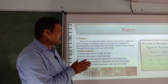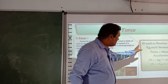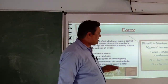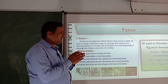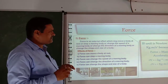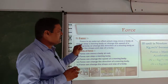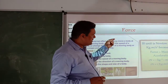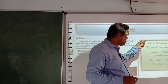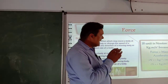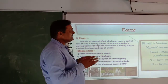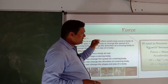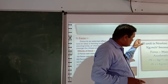Now, the SI unit of force is the Newton, which can also be written as kilogram meter per second squared. These are known as the Newton. So Newton is the SI unit of force, and the CGS unit is the dyne.